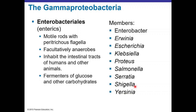Enterobacteriales, or Enterics, have peritrichous flagella, are facultative anaerobes, live in intestines of humans and animals, and ferment glucose and other carbohydrates. They can be classified based on fermentation of glucose and gas production. Members include Enterobacter, Erwinia, Escherichia, Klebsiella, Proteus, Salmonella, Serratia, Shigella, and Yersinia.